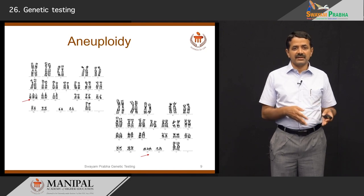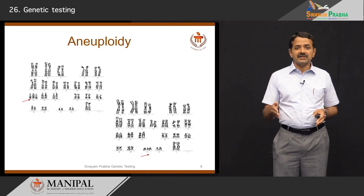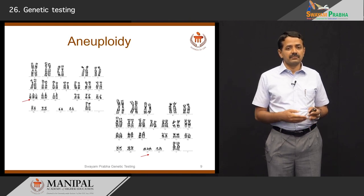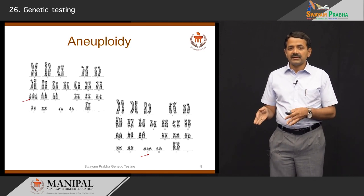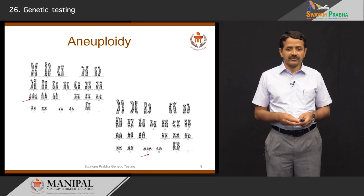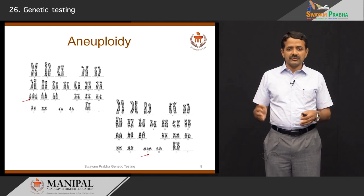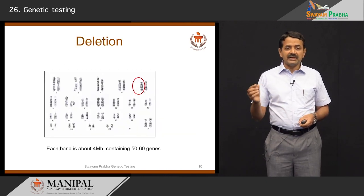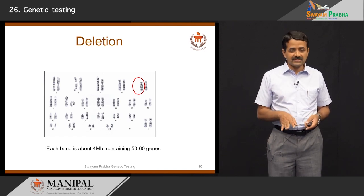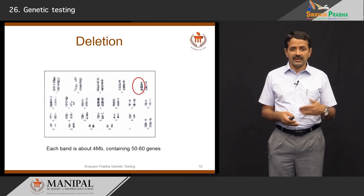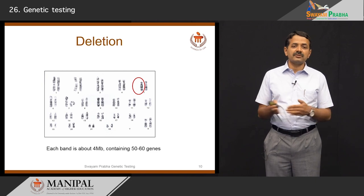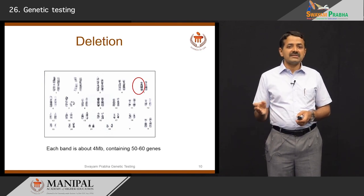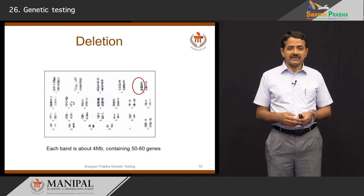As shown here, trisomy 13 has one additional chromosome — 47 chromosomes with one extra chromosome 13. In the second slide, trisomy 21 is one of the most common conditions with one extra copy of chromosome 21. Karyotyping can also detect deletions, duplications, or translocations — where a segment is exchanged between two chromosomes — which can be detected by karyotyping.